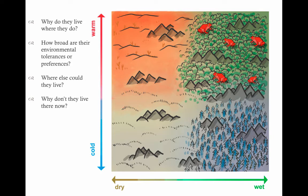When we're looking at a single species, we could be asking things like why species live where they do, how broad are their environmental tolerances compared to what's available to them, where else they might live, and if there are other places where they could live, why don't they live there now - is it biotic interactions, dispersal limitations, stuff like that?